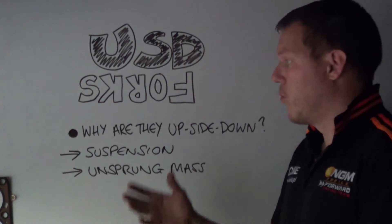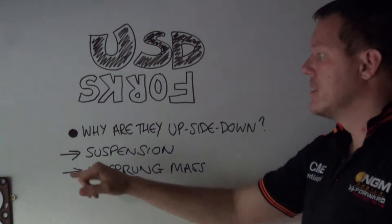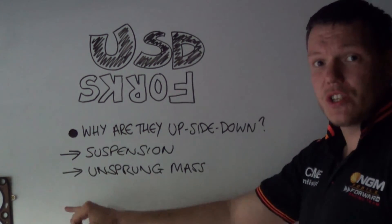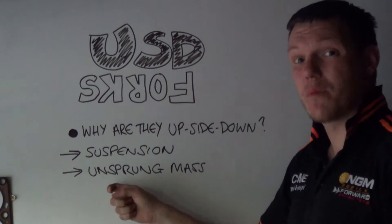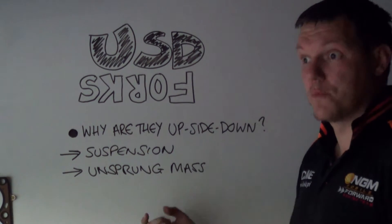To understand why they've been turned upside down, we need to understand a bit about suspension and then on the tail end of that we need to understand what unsprung mass is and sprung mass.